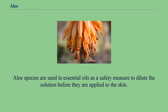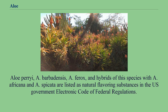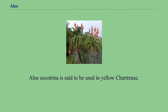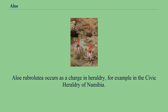Aloe species are used in essential oils as a safety measure to dilute the solution before they are applied to the skin. Aloe perryi, A. barbadensis, A. ferox, and hybrids of this species with A. africana and A. spicata are listed as natural flavoring substances in the U.S. government electronic code of federal regulations. Aloe socotrina is said to be used in yellow Chartreuse. Aloe rubroviolacea occurs as a charge in heraldry, for example in the civic heraldry of Namibia.